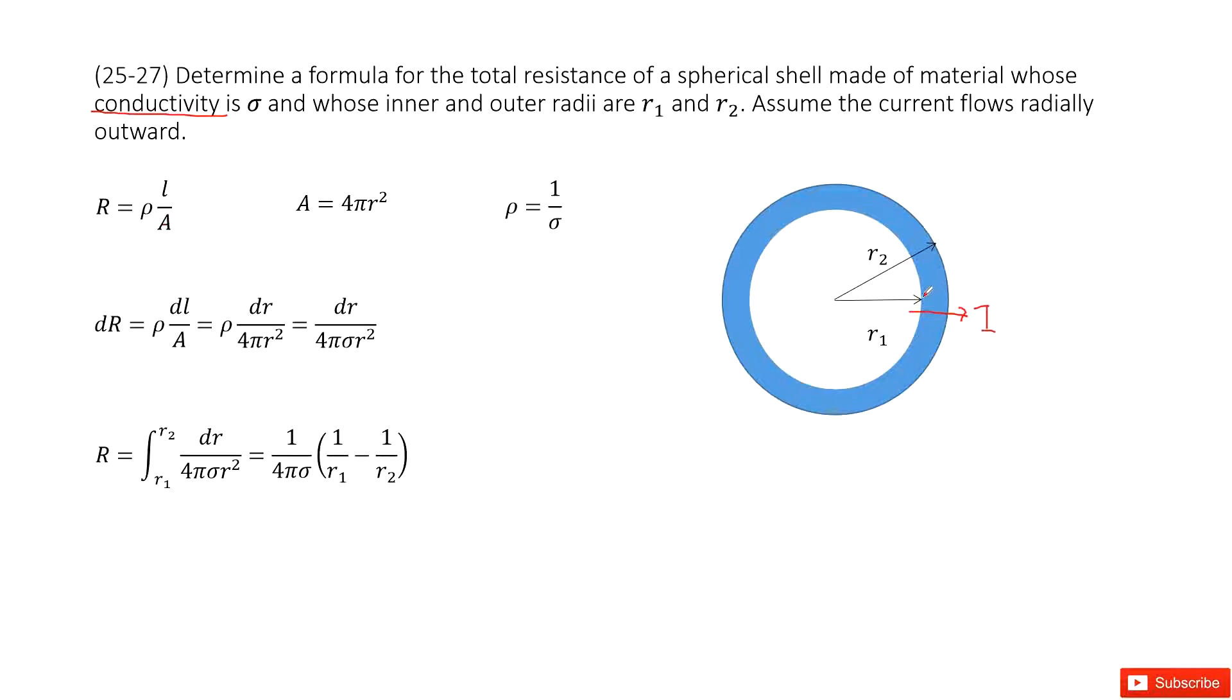We can consider cutting a small fraction of these shells. For this small fraction, you can see the cross-sectional area for this fraction is 4 pi r squared for this shell.